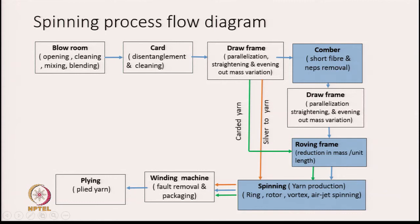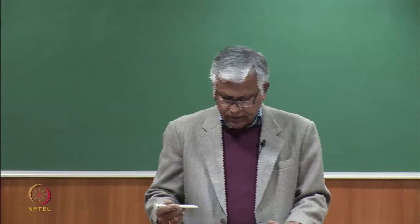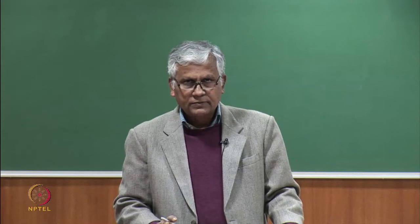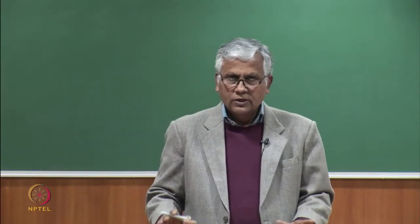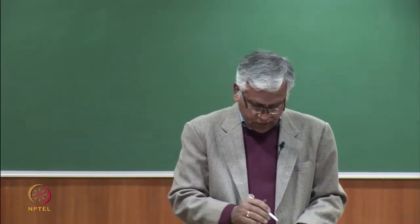This is how the spinning process flow diagram looks. In this particular course, we are going to discuss the combing machine, then the roving frame, and then the ring spinning machine. These three machines we are going to learn in this course.